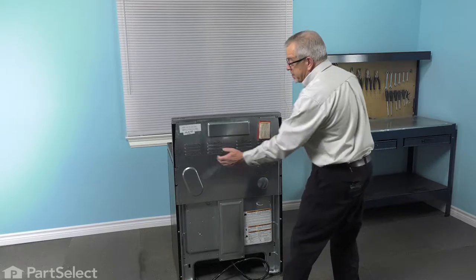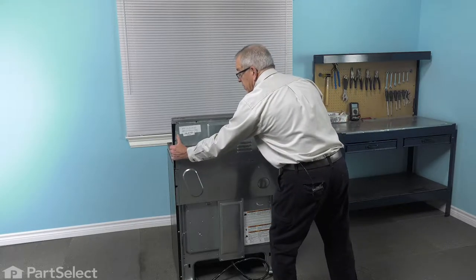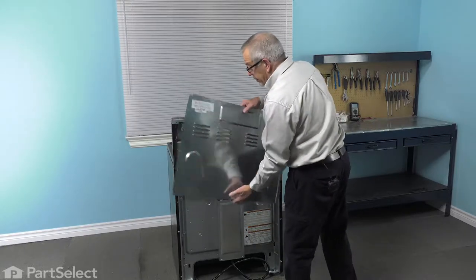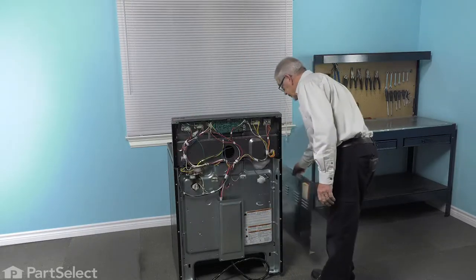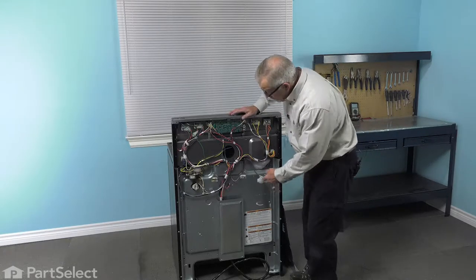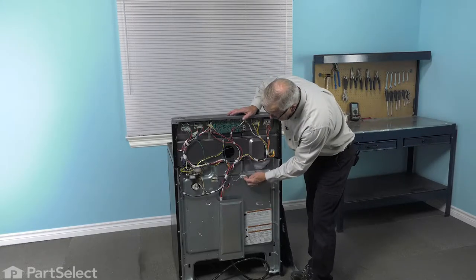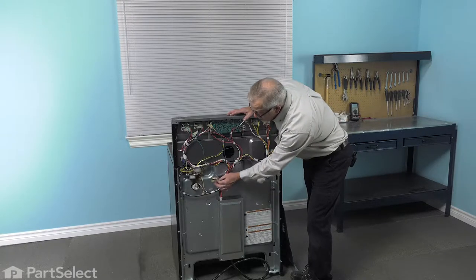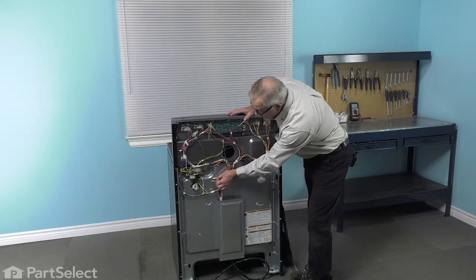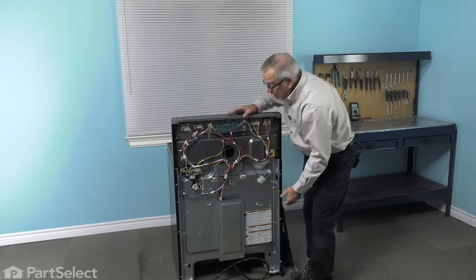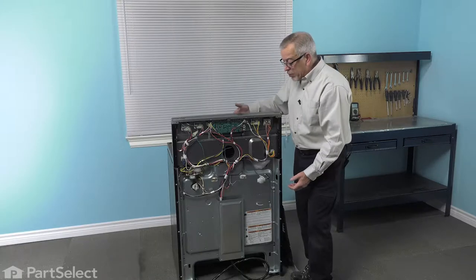Now, we'll need to flex that back panel to release the tabs at the top, and then we can simply lift it off. Now, with it removed, our next step will be to take the two wire ends off of the element terminals. Simply just pull them straight off, and now we can go back to the inside of the oven and pull that element out.